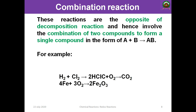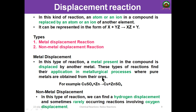The combination reaction is the opposite of decomposition — it is the formation of a single compound from two or more compounds: A + B → AB. For example, H2 + Cl2 → 2HCl; C + O2 → CO2. Similarly, 4Fe + 3O2 → 2Fe2O3. Both reactants combine to form a complex product. This is known as a combination reaction.